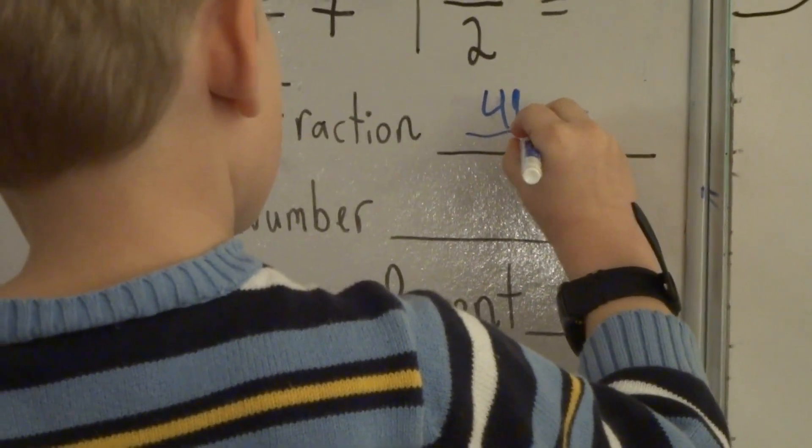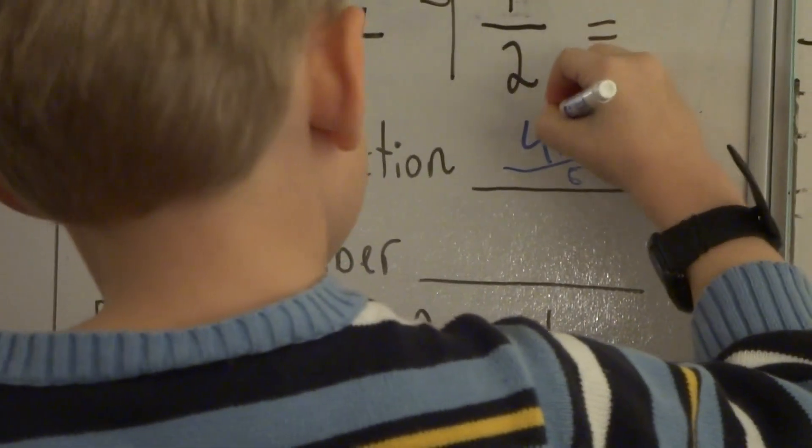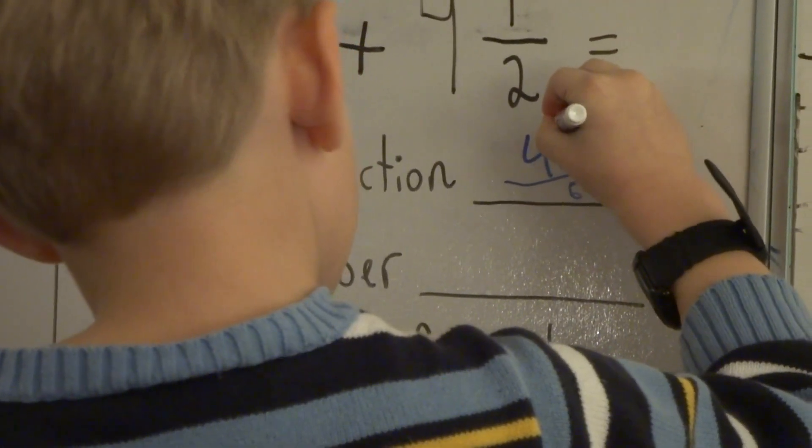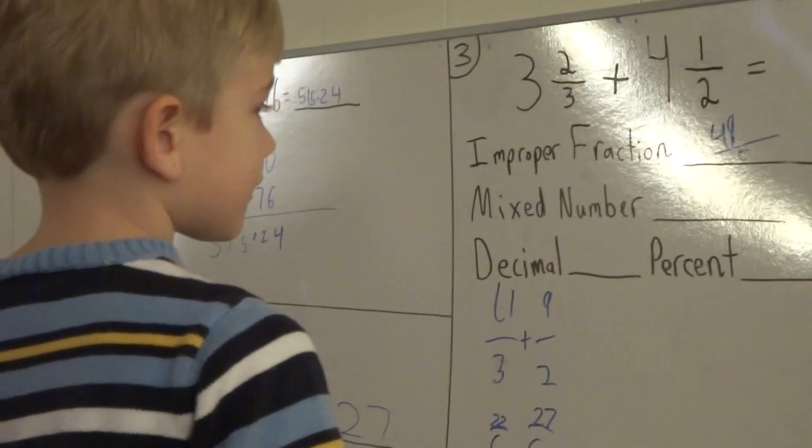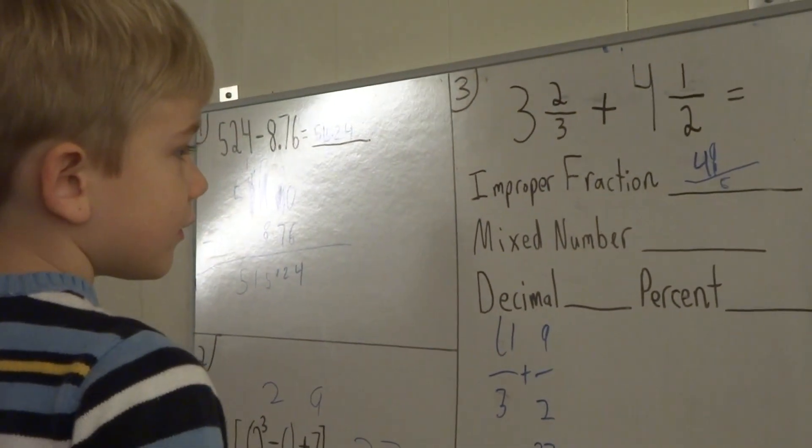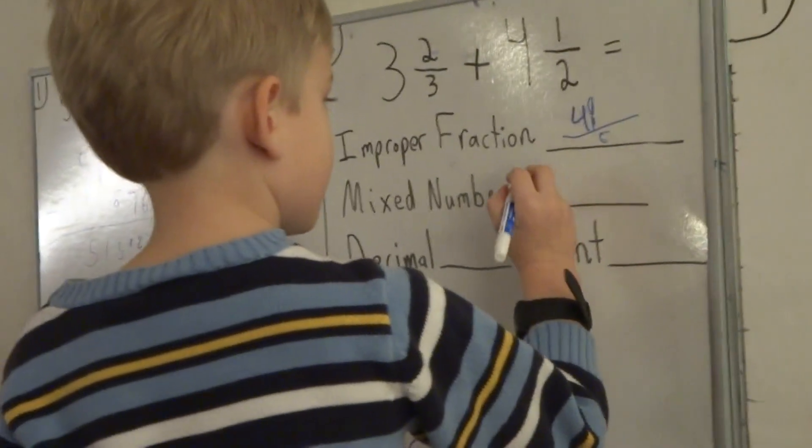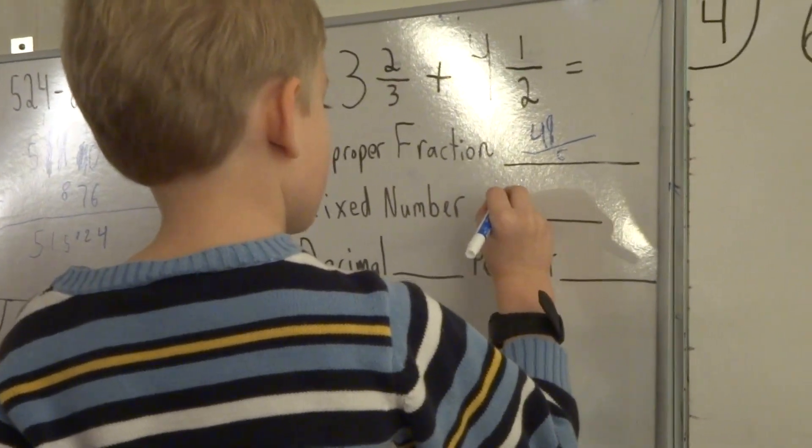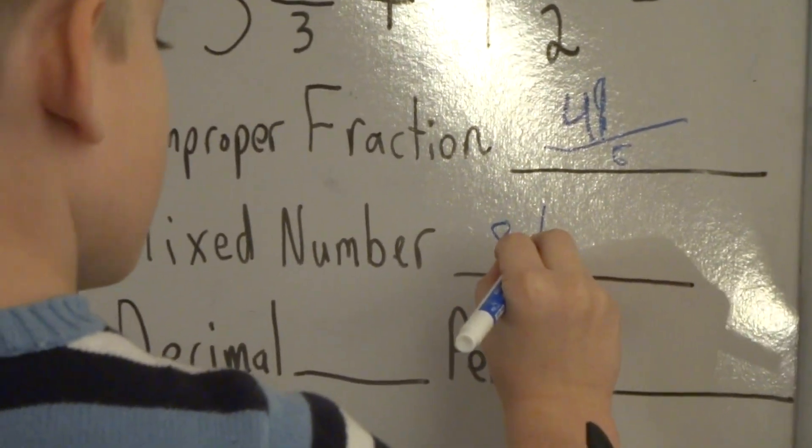Good. What's that digit after the four? It's a little messy. Nine. Okay, can you write that again? Good. Now what? Come here. Mixed number.